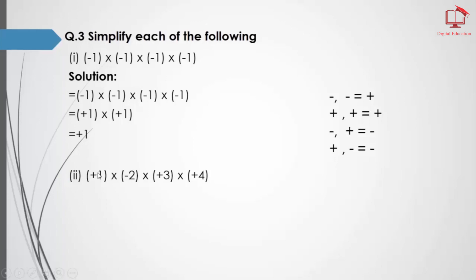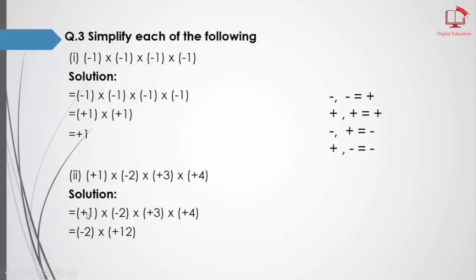Part number 3: first we multiply the first two digits, then the next two. Here 2 times 1 equals 2, and plus times minus equals minus. Then 4 times 3 equals 12, and plus times plus equals plus. Now 4 times 12 equals 24, and plus times minus equals minus. In multiplication the signs also multiply along with the numbers, but in addition and subtraction we check which number is greater and assign that number's sign — this is the difference between multiplication and addition/subtraction.